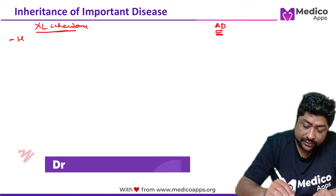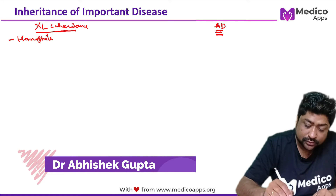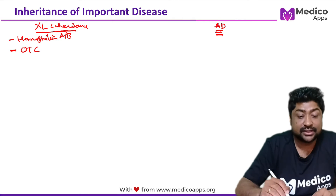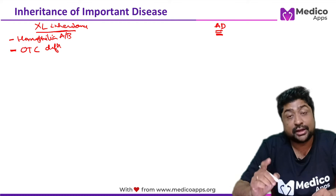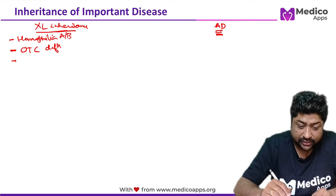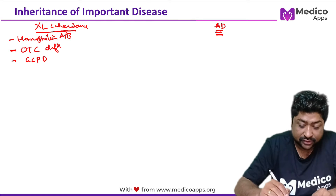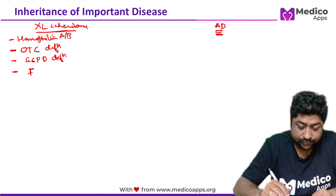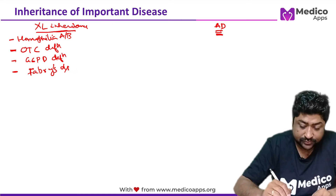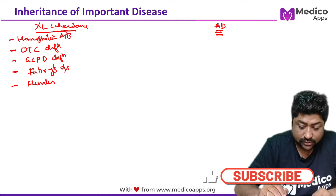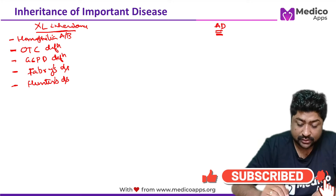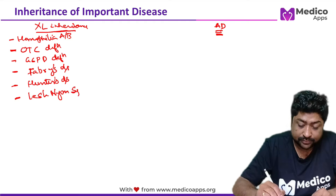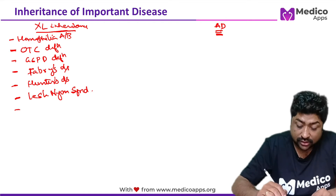Let's enumerate all the X-linked inheritance disorders, both dominant and recessive. The first is hemophilia — very important, X-linked recessive. Then we have ornithine transcarbamylase deficiency, a urea cycle disorder, also very important. Third is G6PD deficiency — glucose-6-phosphate dehydrogenase deficiency. Next are Fabry's disease and Hunter's disease. Another important X-linked disorder is Lesch-Nyhan syndrome. Next is color blindness.